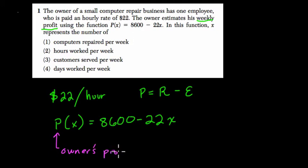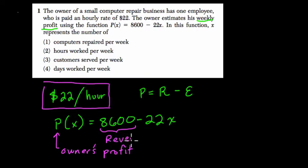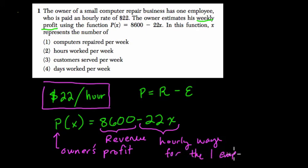So what is the only expense that's being discussed in this problem? Well, that's the wage that the workers are making per hour. So you can think that every week, the owner of this company is going to be making 8,600. So this is the revenue, and here we're subtracting out the hourly wage for the one employee.